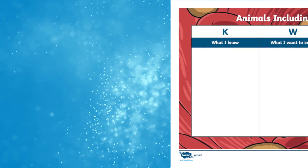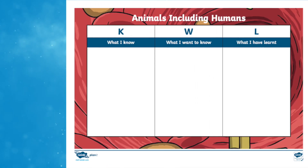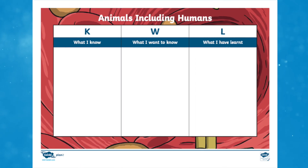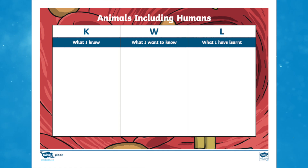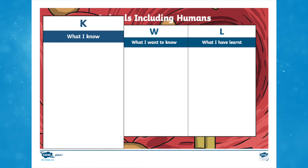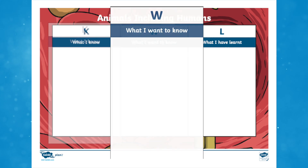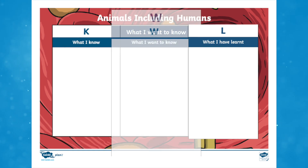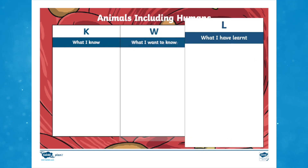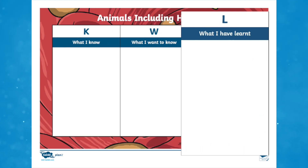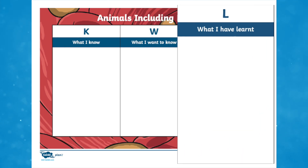As this lesson is the first in the Year 6 unit on animals including humans, a KWL grid is also provided. Why not start the lesson by asking children to record what they already know about this topic and what they would like to know? At the end of, or throughout, the unit, they can fill in what they've learned.